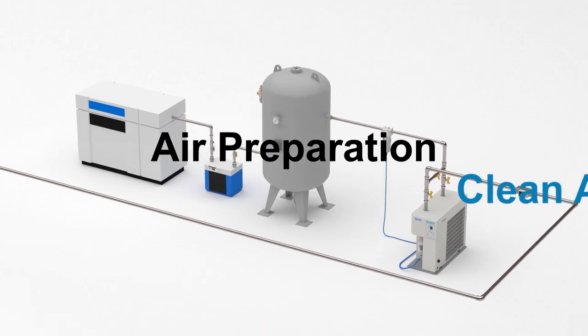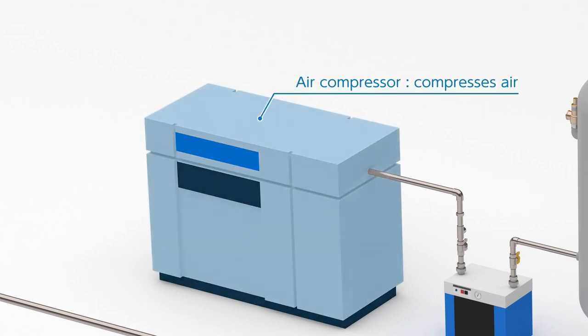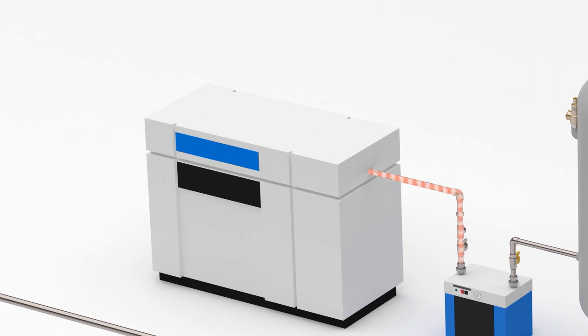Firstly, for the processing of clean air for pneumatic systems in factory production lines, compressed air is first generated by the air compressor.